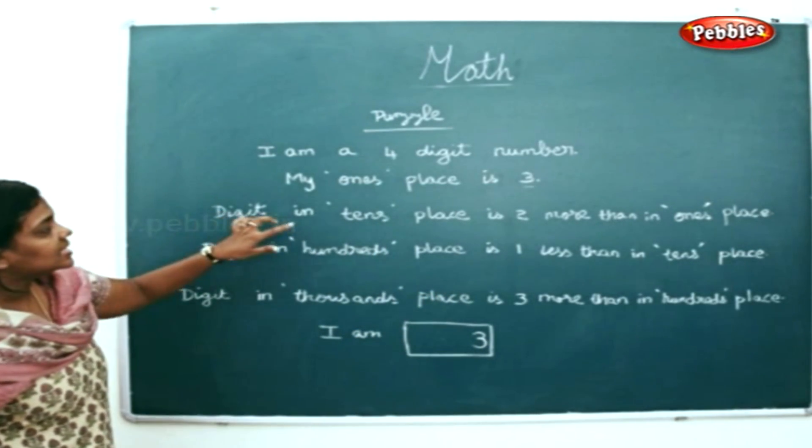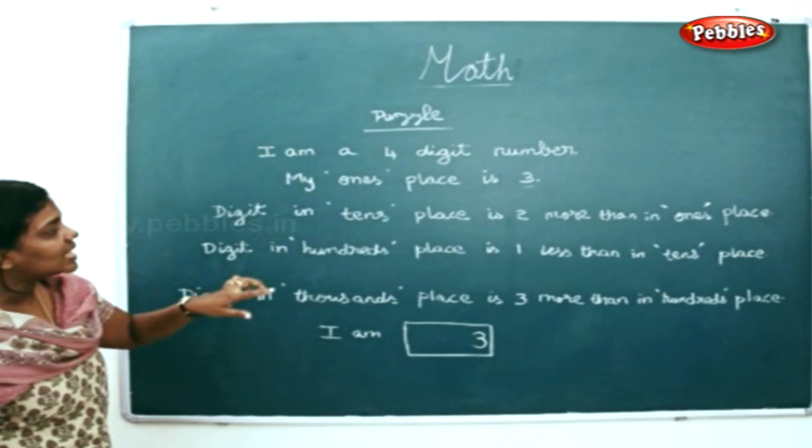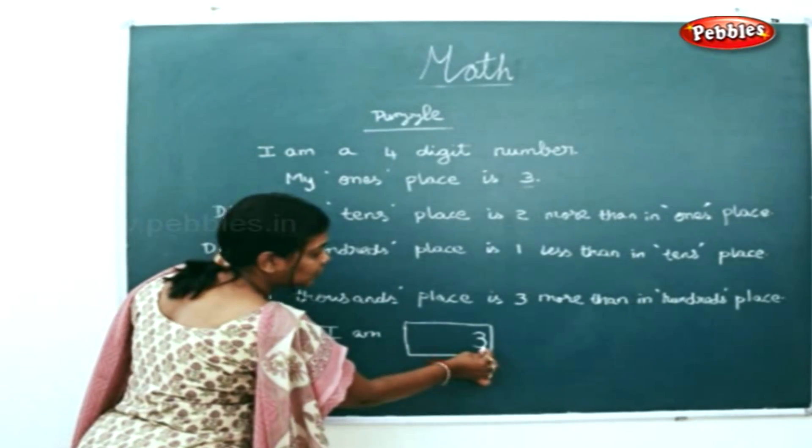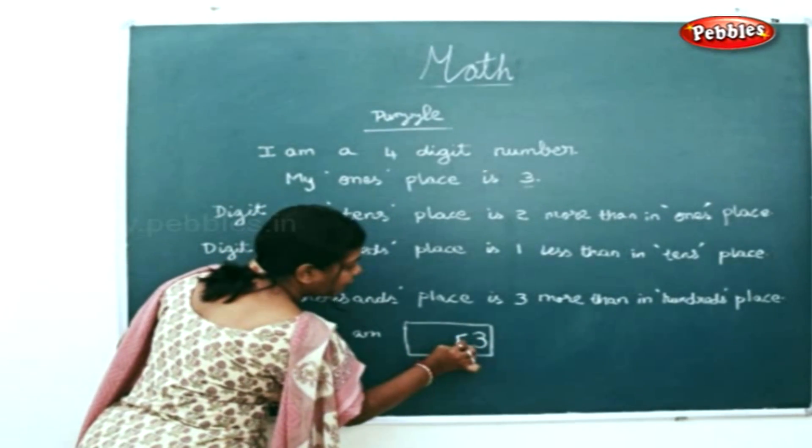In the tens place, it's two times more than the ones place. Two times more than three will be five.